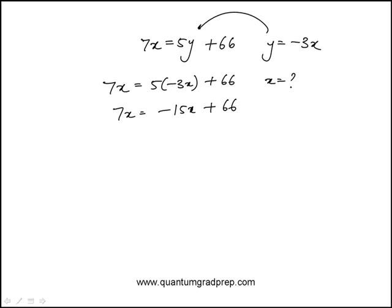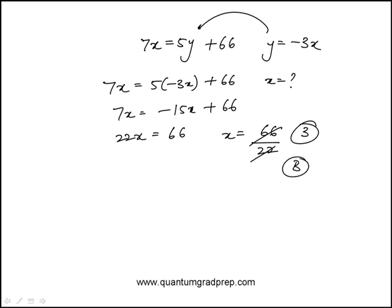Add 15x to both sides, and that becomes 22x is 66. So x is 66 over 22, and that is 3 — answer choice B.